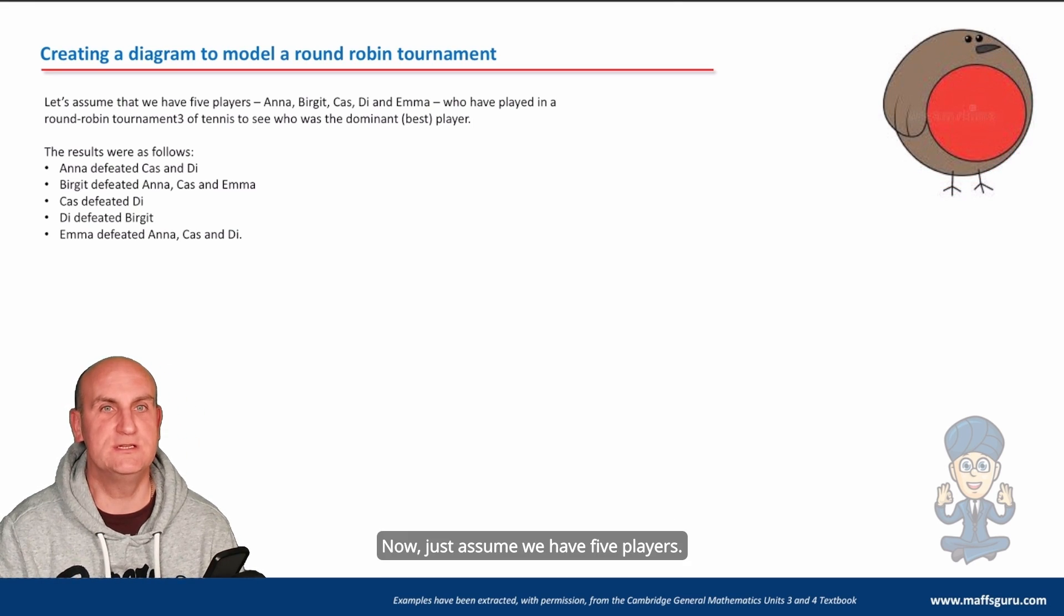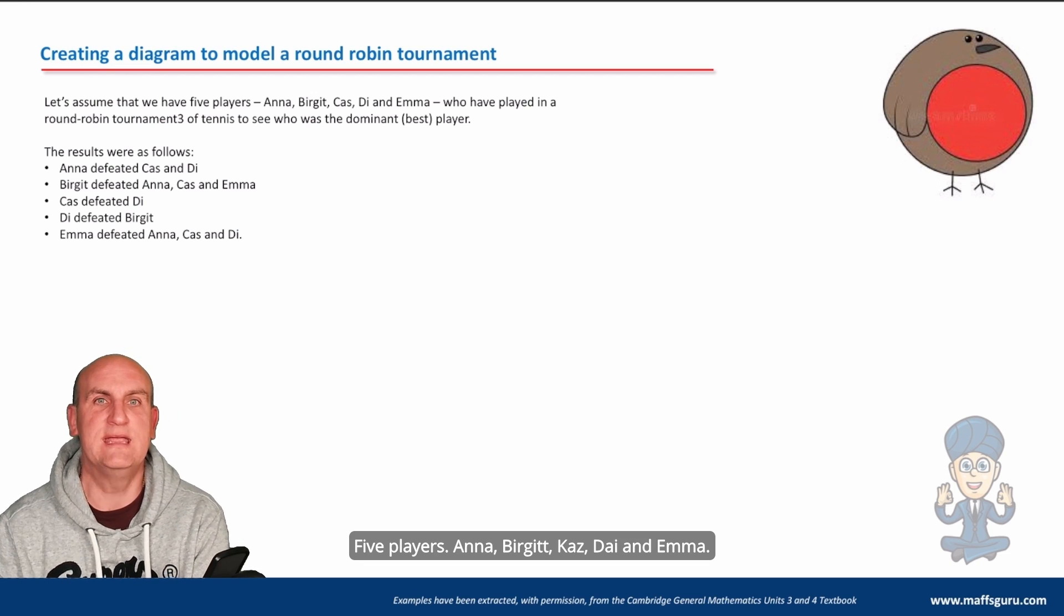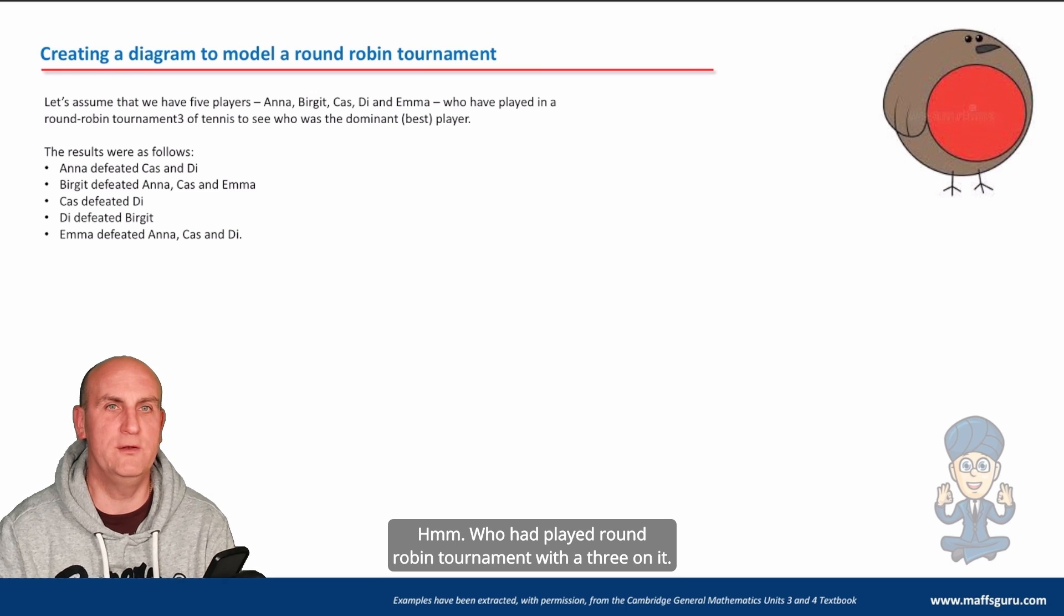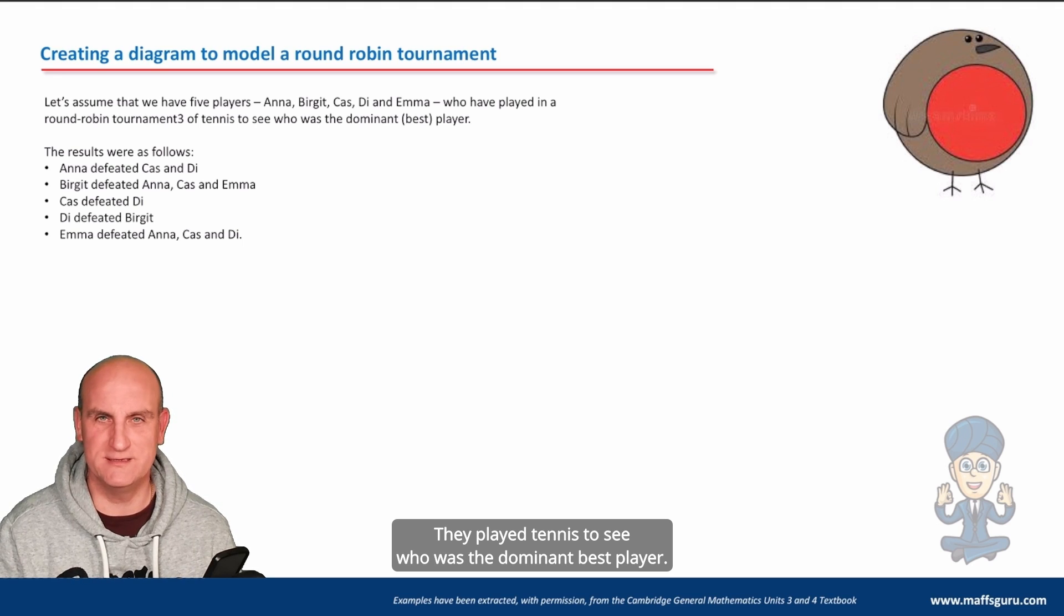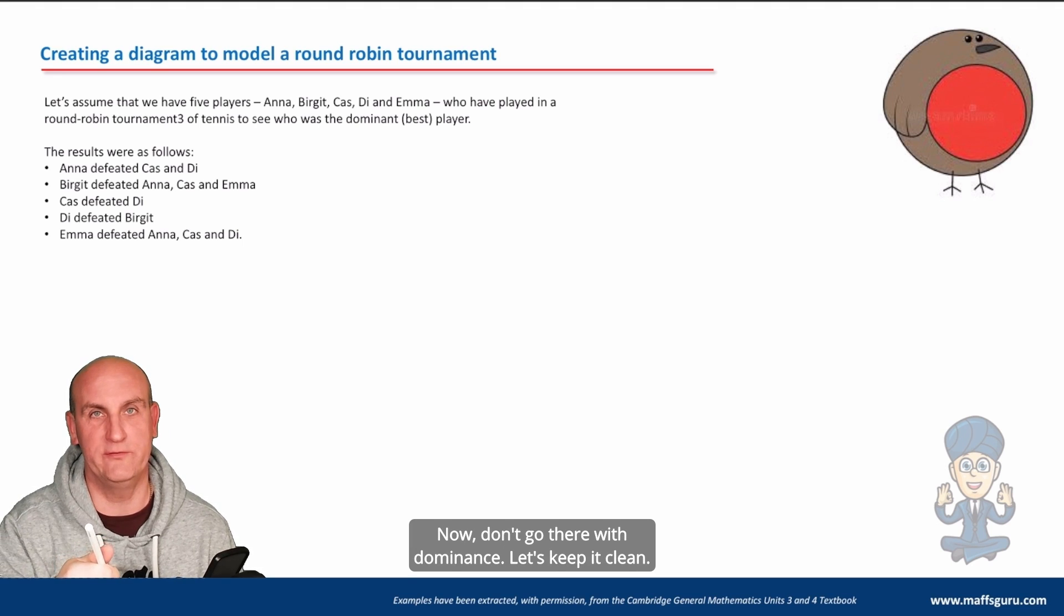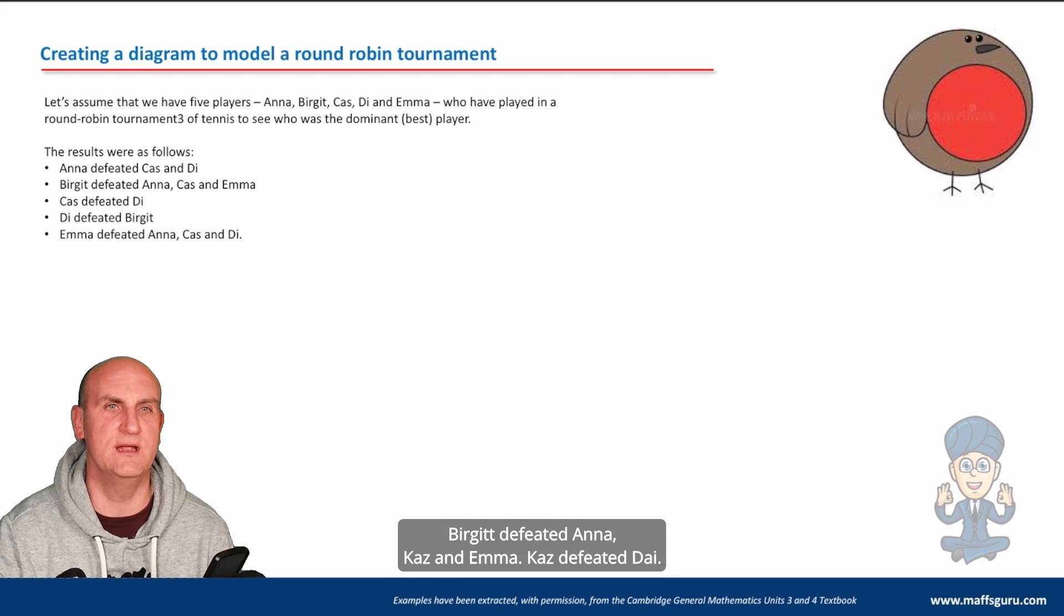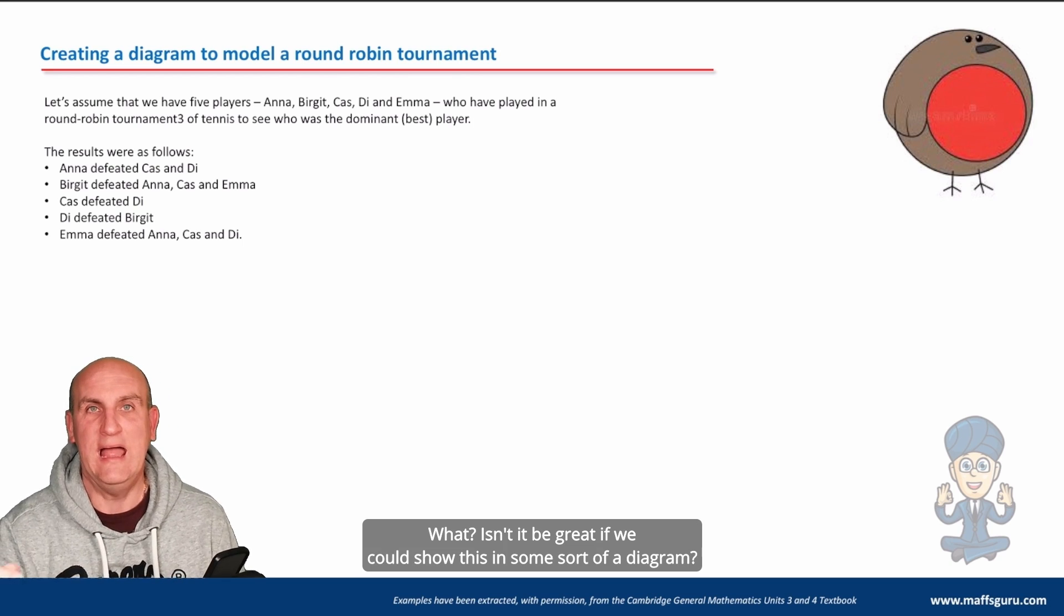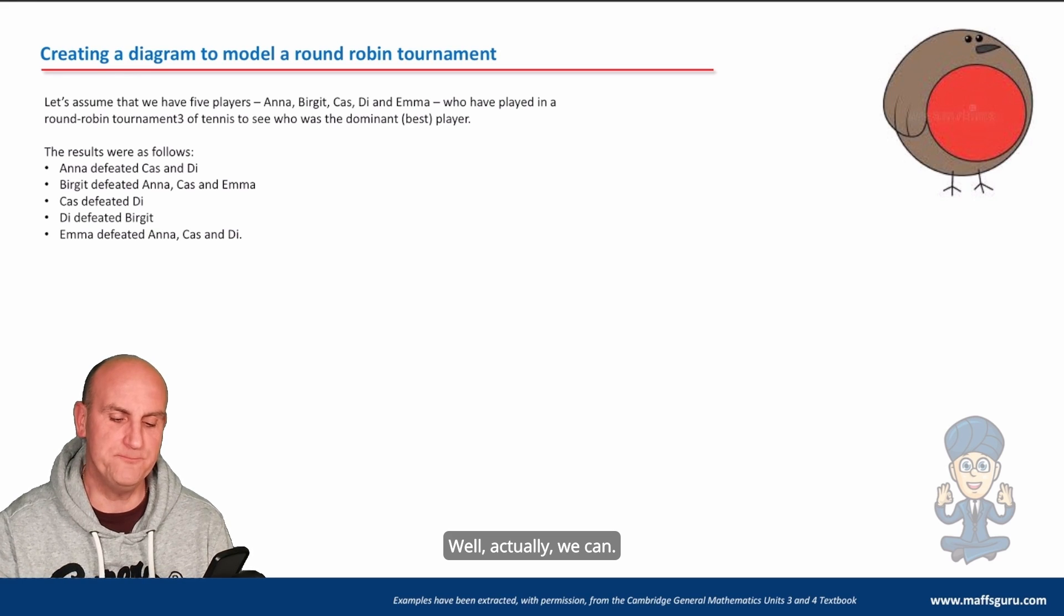But here we go - there is a round robin. You see what I did there? That took hours to find, that round robin. Now just assume we have five players - Anna, Burgett, Kaz, Dye, and Emma - who had played a round robin tournament. They played tennis to see who was the dominant best player. The results were as follows: Anna defeated Kaz and Dye; Burgett defeated Anna, Kaz, and Emma; Kaz defeated Dye; Dye defeated Burgett; and Emma defeated Anna, Kaz, and Dye. Wouldn't it be great if we could show this in some sort of diagram? Well actually, we can.